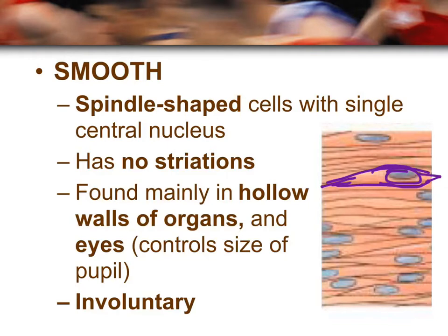Smooth muscle is found in hollow organs such as the digestive tract, the respiratory tract, the reproductive tract, and the urinary tract. It also forms the muscles of the eye around the pupil, which controls the amount of light that gets into the eye. Like cardiac muscle, smooth muscle is involuntary, which means we don't control it.